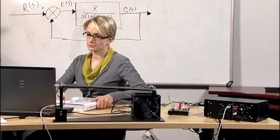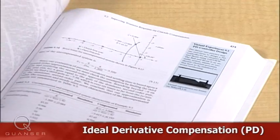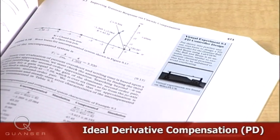Quanser's ball and beam experiment effectively demonstrates a real-life application of PD control and how it relates to stabilizing a ball on a track.